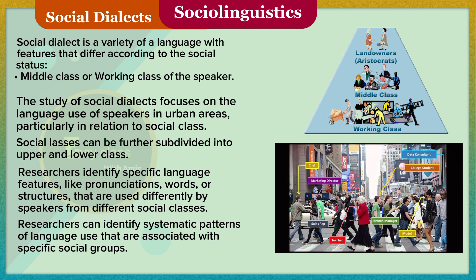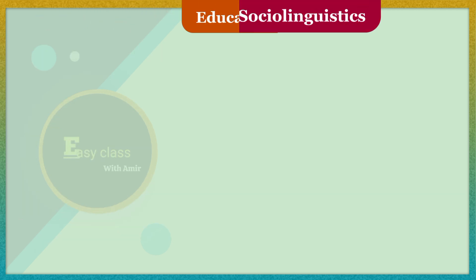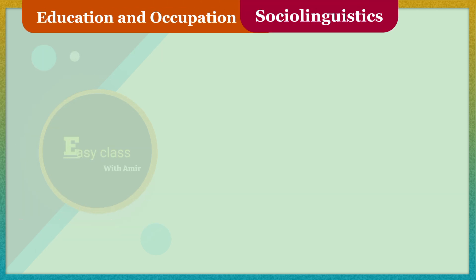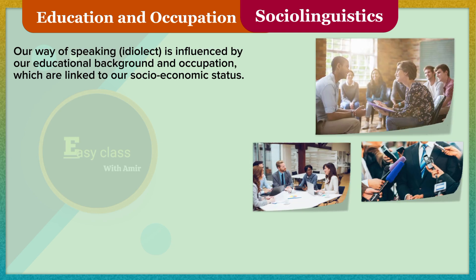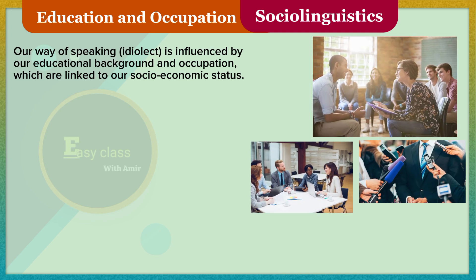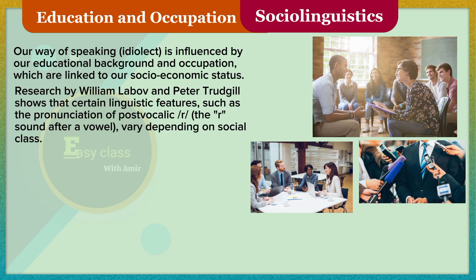Researchers can identify systematic patterns of language use that are associated with specific social groups. Our way of speaking — idiolect — is influenced by our educational background and occupation, which are linked to our socioeconomic status. Research by William Labov and Peter Trudgill shows that certain linguistic features, such as the pronunciation of post-vocalic R (the R sound after a vowel), vary depending on social class.